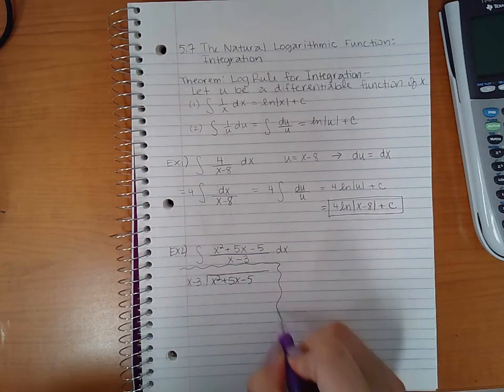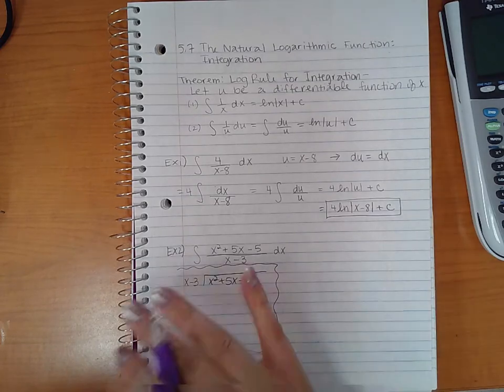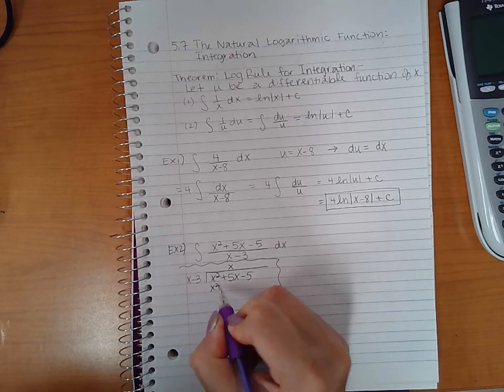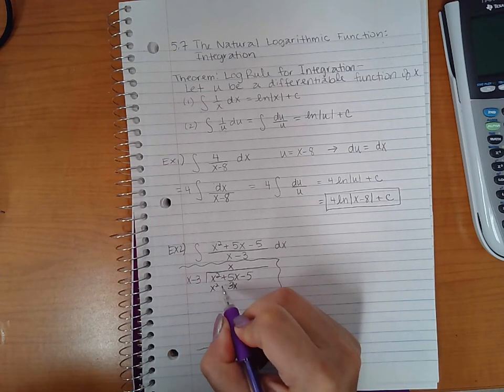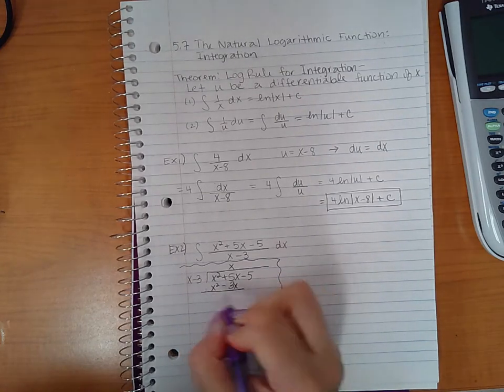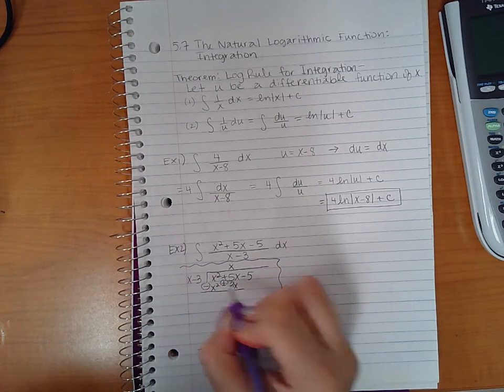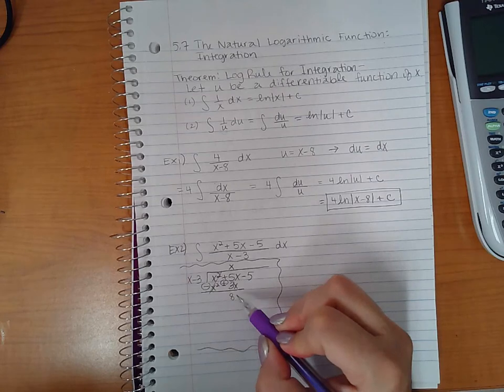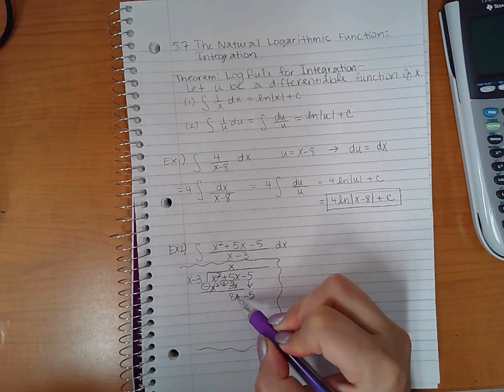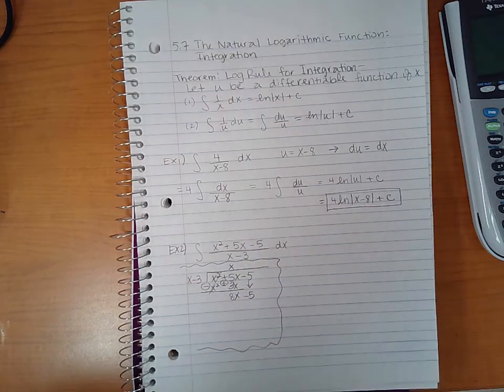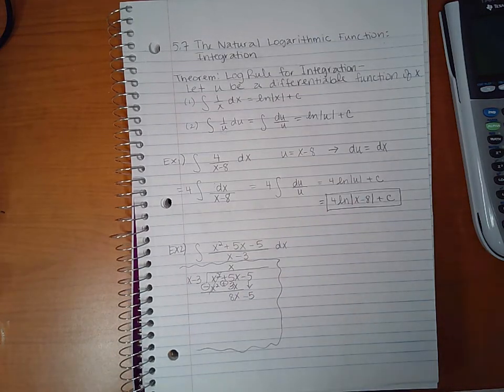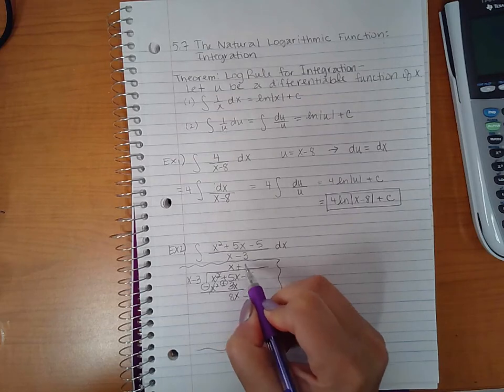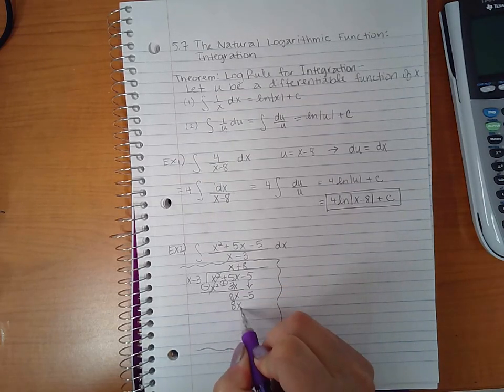This is going to all be my side work over here. x goes into x squared x times. x times x is x squared, x times 3 is 3x, and then I'm going to change the signs like subtracting these terms. So minus this will become plus. x squared minus x squared cancels. 5x plus 3x is 8x and I'm going to bring down the next term. Then x goes into 8x a positive 8 times.